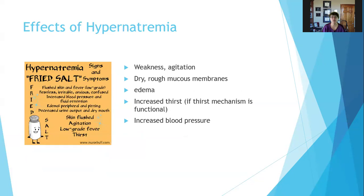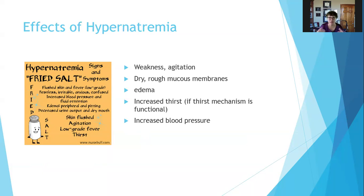Hypernatremia can cause weakness, agitation, rough dry mucous membranes — since hypernatremia and dehydration often go hand in hand — but also edema, which seems like the opposite. It also causes increased thirst (if the thirst mechanism is still functional) and increased blood pressure.